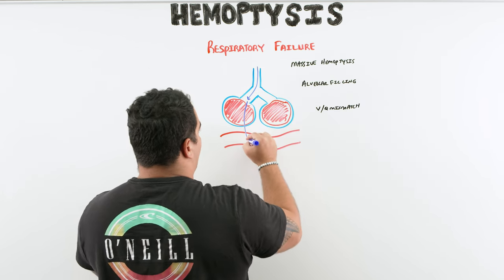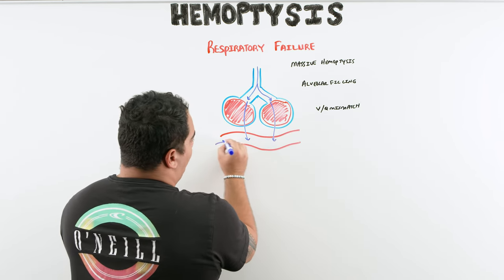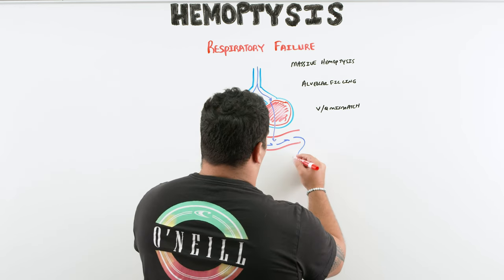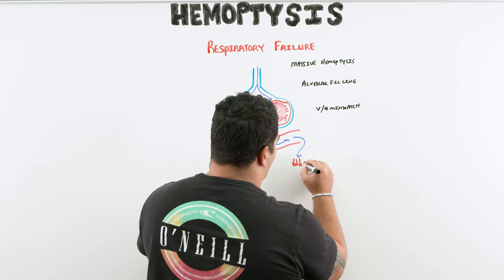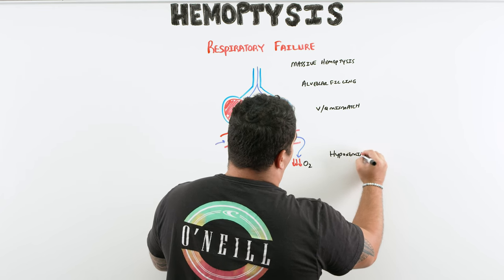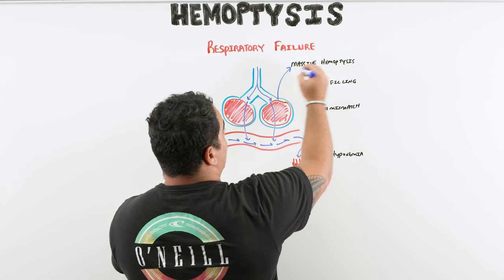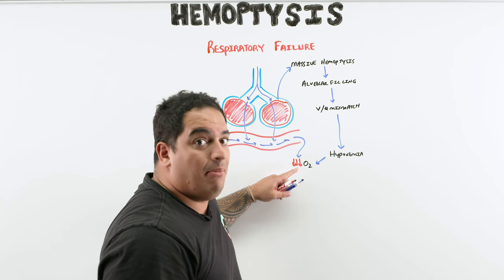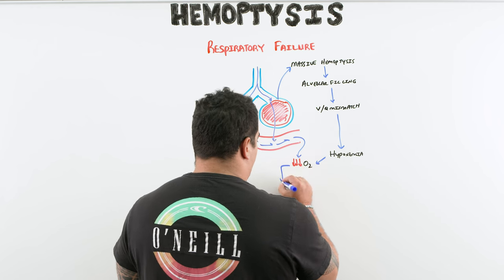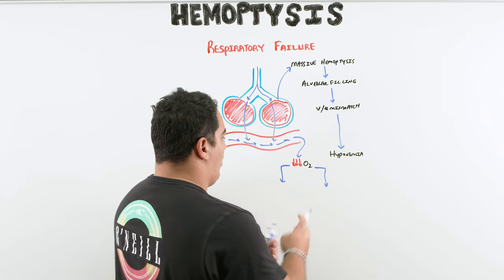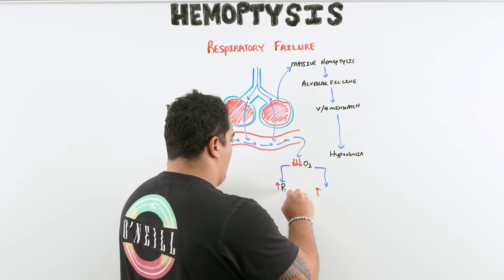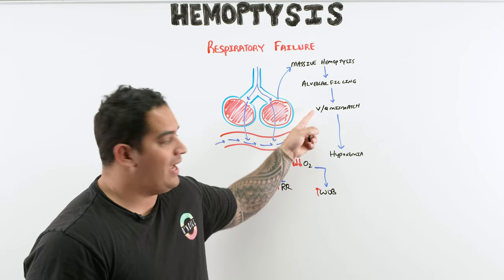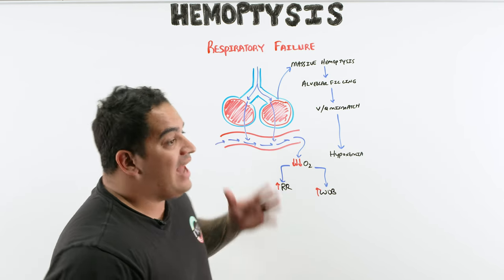VQ mismatching and shunt processes significantly impair gas exchange. As perfusion may remain normal through these areas of alveolar hemorrhage, this leads to a reduction in oxygen — hypoxemia. Massive hemoptysis → alveolar filling → VQ mismatch → hypoxemia. These patients may look terrible with increased respiratory rate and increased work of breathing. Respiratory failure is therefore a potential sign of massive hemoptysis.